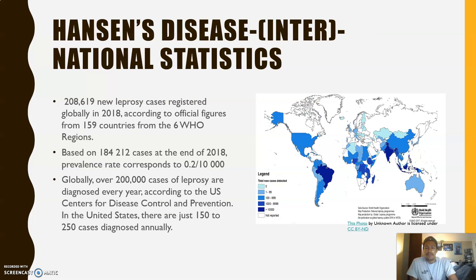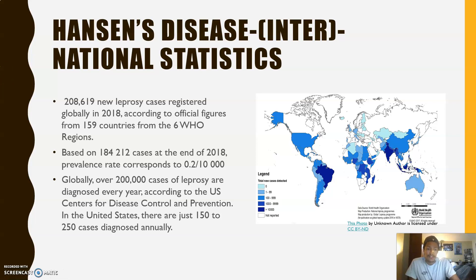Hansen's disease — international statistics. Globally, about 200,000 cases of leprosy are diagnosed annually. In the US, about 150 to 250 cases are diagnosed annually. The main hotspots are Brazil, India, and Indonesia — those are the three countries with the largest number of cases most of the time.